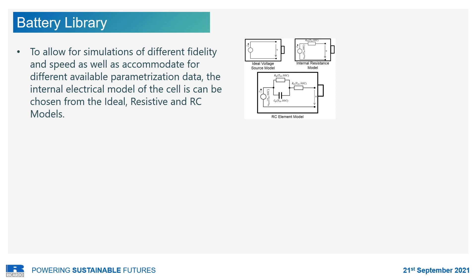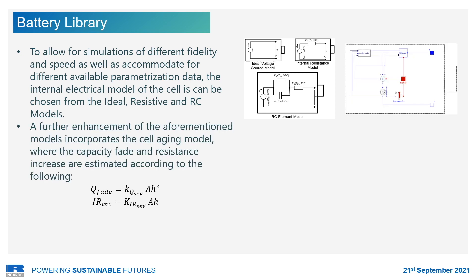For that reason, the cell model can be selected from the ideal, resistive, and RC models, fully utilizing the replaceability of Modelica. Given available aging data for the selected cell, the cell models can be further enhanced by adding a calibrated aging model, which estimates capacity fade and DCIR increase, according to the equations presented here.